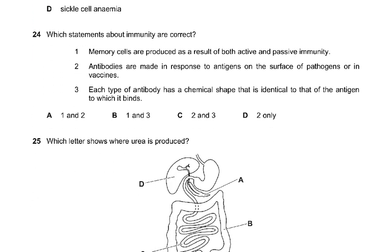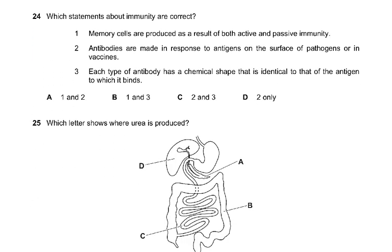Question 24: which statements about immunity are correct? Memory cells are produced as a result of both active and passive immunity — no, memory cells are only produced in active immunity, not passive. Antibodies are made in response to antigens on the surface of pathogens or in vaccines. Each type of antibody has a chemical shape that is complementary — not identical — to that of the antigen to which it binds. So only statement two is correct; the answer is D.